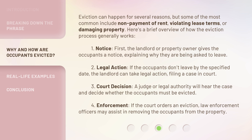1. Notice — first, the landlord or property owner gives the occupants a notice, explaining why they are being asked to leave. 2. Legal action — if the occupants don't leave by the specified date, the landlord can take legal action, filing a case in court. 3. Court decision — a judge or legal authority will hear the case and decide whether the occupants must be evicted. 4. Enforcement — if the court orders an eviction, law enforcement officers may assist in removing the occupants from the property.